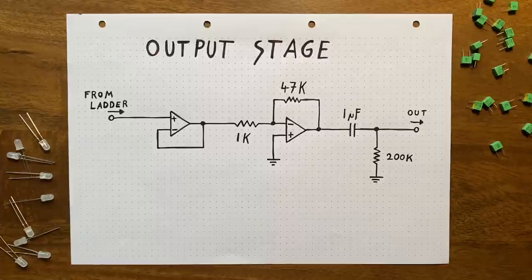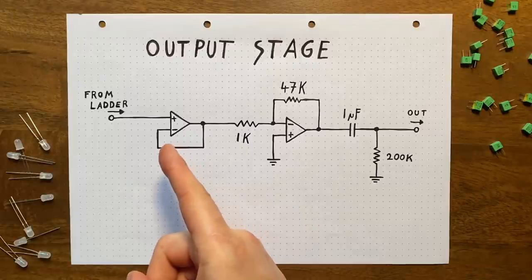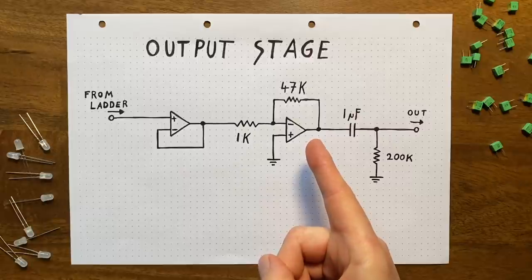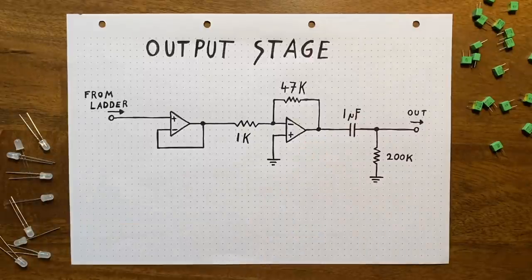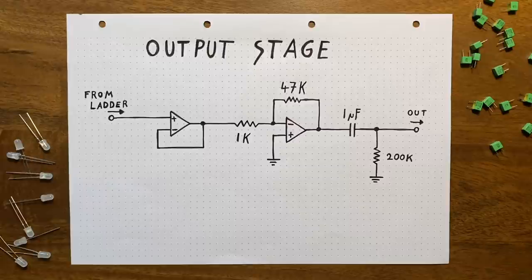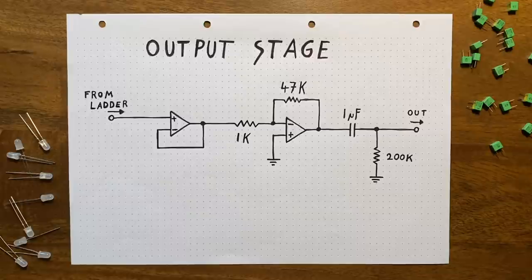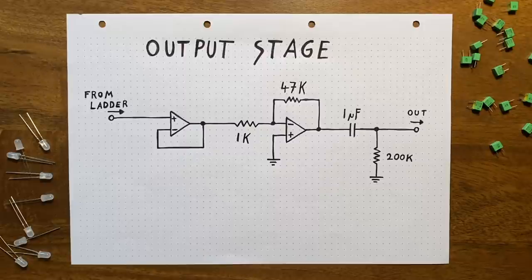As you can see, I chose to first buffer the diode ladder's output, before then blowing it up using an inverting amplifier. This has two reasons. First of all, by inverting the output, we make sure that it's in phase with the input. Because remember, while making our two offset copies, we inverted both of them. So this pretty much reverses that. But in order to not load the ladder's output, we need the buffer here. And second, we will also need that buffer to implement the resonance path later.